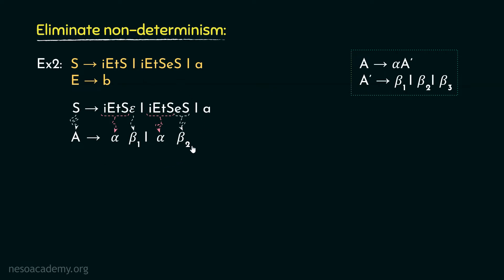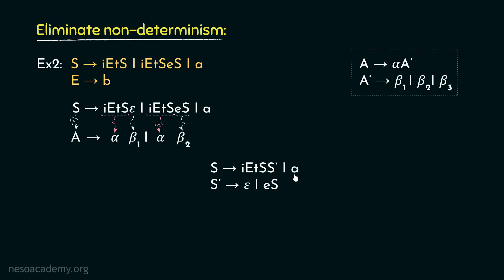Since we have identified all the components, we can now proceed with left factoring. S can be rewritten as the common prefix i, e, t, S followed by a newly formed non-terminal, say S prime. From S prime, we derive the betas: S prime can be rewritten as epsilon or small e followed by S. Also, S can be rewritten as small a, so we include that rule too. The complete set of deterministic CFGs is: S → i e t S S' | a; S' → epsilon | e S; e → b.